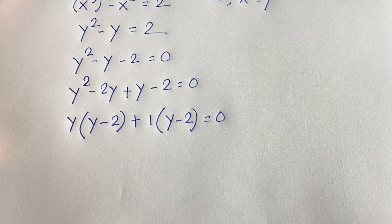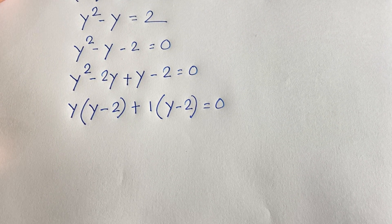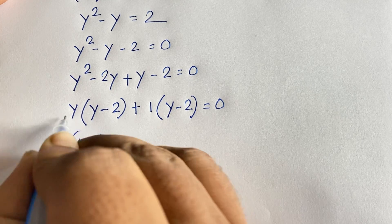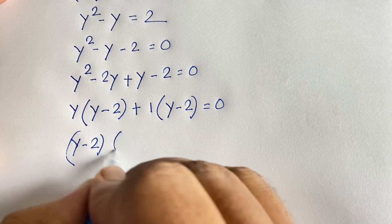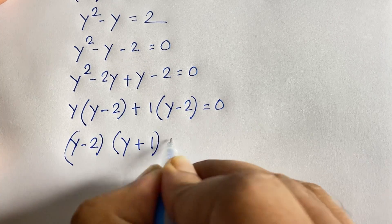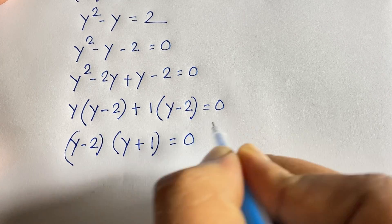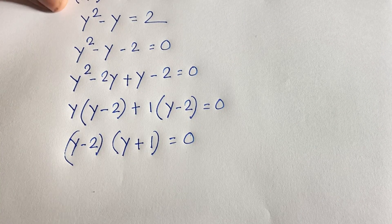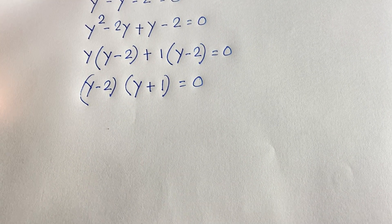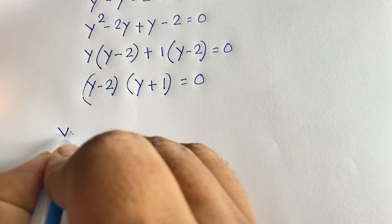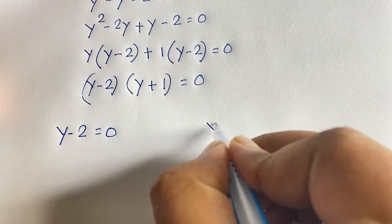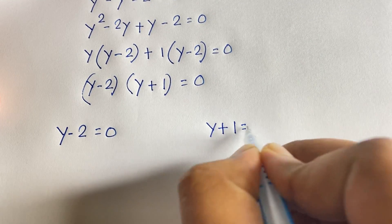So (y minus 2) is common overall, giving us (y minus 2)(y plus 1) is equal to 0. We get two cases: first case is y minus 2 equals 0, and the other case is y plus 1 equals 0.